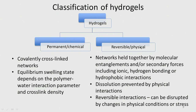When there is physical bonding, it is reversible — the material can absorb water or give it up. Chemical bonding involves covalent crosslinking where equilibrium swelling depends on polymer-water interaction and crosslink density. Physical networks are made up of molecular entanglement or secondary forces like ionic, hydrogen bond, and hydrophobic interactions. These are all reversible, and when physical conditions or stress change, the material may return to a dry state.